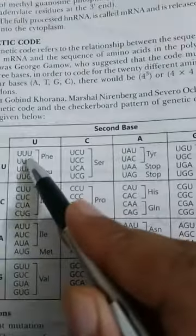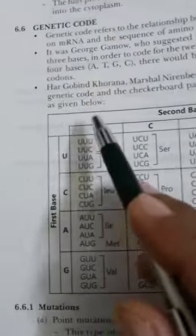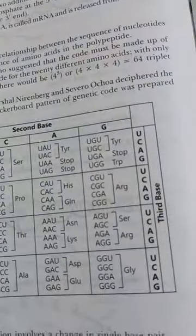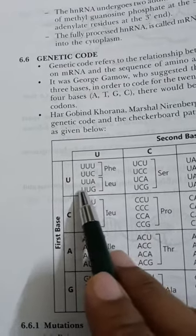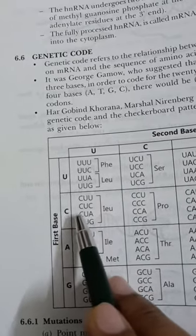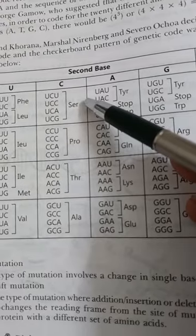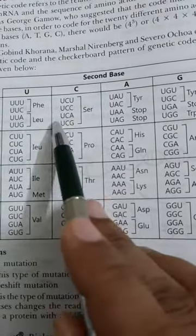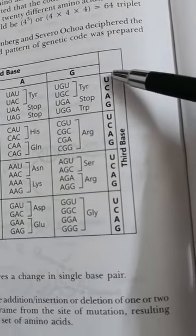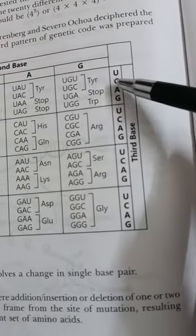Looking at the genetic code table: the first base can be uracil, cytosine, adenine, or guanine. The second base positions show U, C, A, G. For example, triple U, U-C, U-U-A, U-U-G represent different codons. The table shows combinations with uracil, cytosine, adenine, and guanine in different positions.